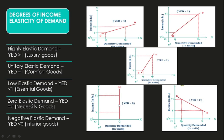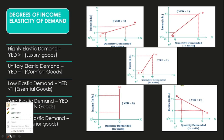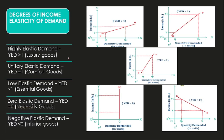There are degrees of income elasticity, just as there are degrees of price elasticity. These degrees are divided into five main portions. Looking at the first three, these are the cases of positive income elasticity — where income elasticity is greater than 1, equal to 1, or less than 1 but still positive. This happens in the case of normal goods.